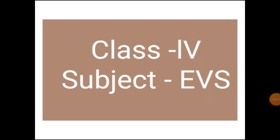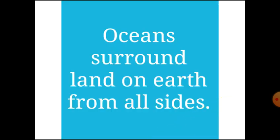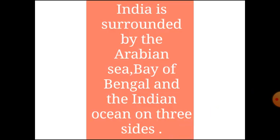Good morning class. Today in the EVA subject, we are going to study about ocean habitat. Oceans surround land on earth from all sides. India is surrounded by the Arabian Sea, Bay of Bengal and the Indian Ocean on three sides.